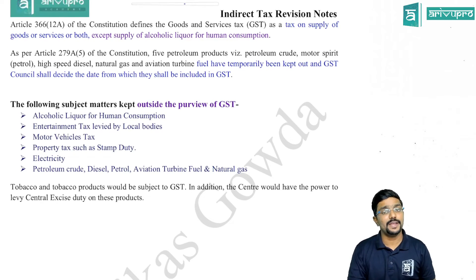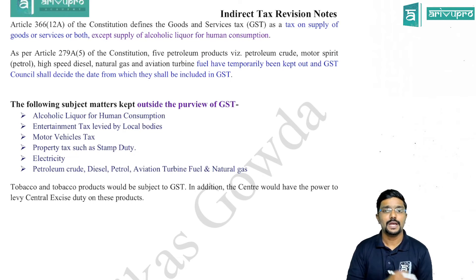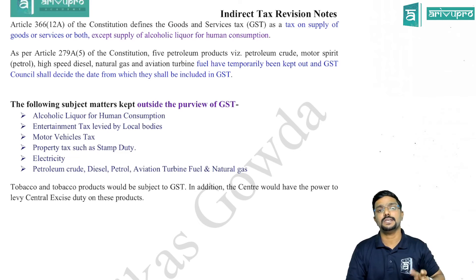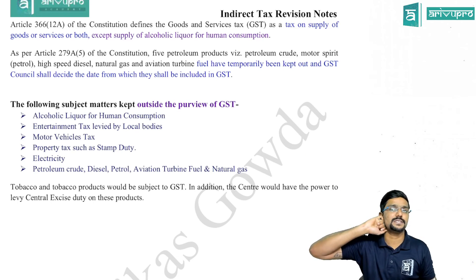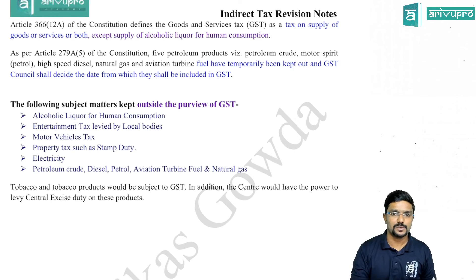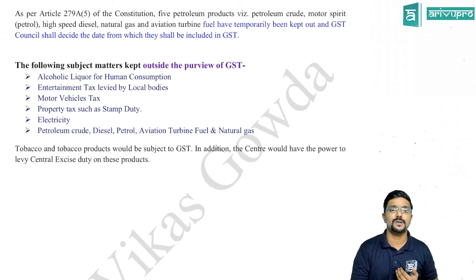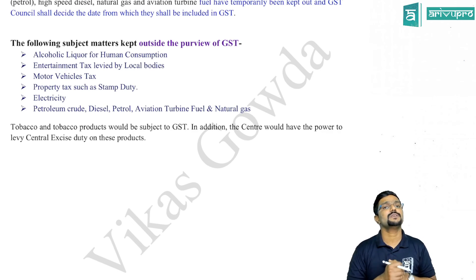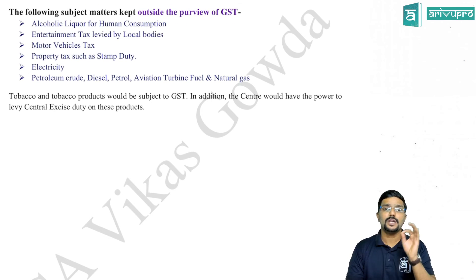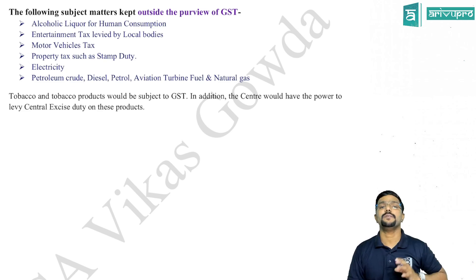As per Article 279A(5) of the constitution, five petroleum products — petroleum crude, motor spirit (petrol), high speed diesel, natural gas, and aviation turbine fuel — have been temporarily kept outside GST. The GST Council shall decide the date from which they shall be included in GST, but as of today they are still outside GST. Other items kept outside GST include entertainment tax levied by local bodies, motor vehicle tax, property tax such as stamp duty, and electricity duties. On tobacco and tobacco products, excise duty on manufacturing is still levied and GST is levied on sale — so both excise and GST apply to tobacco products.